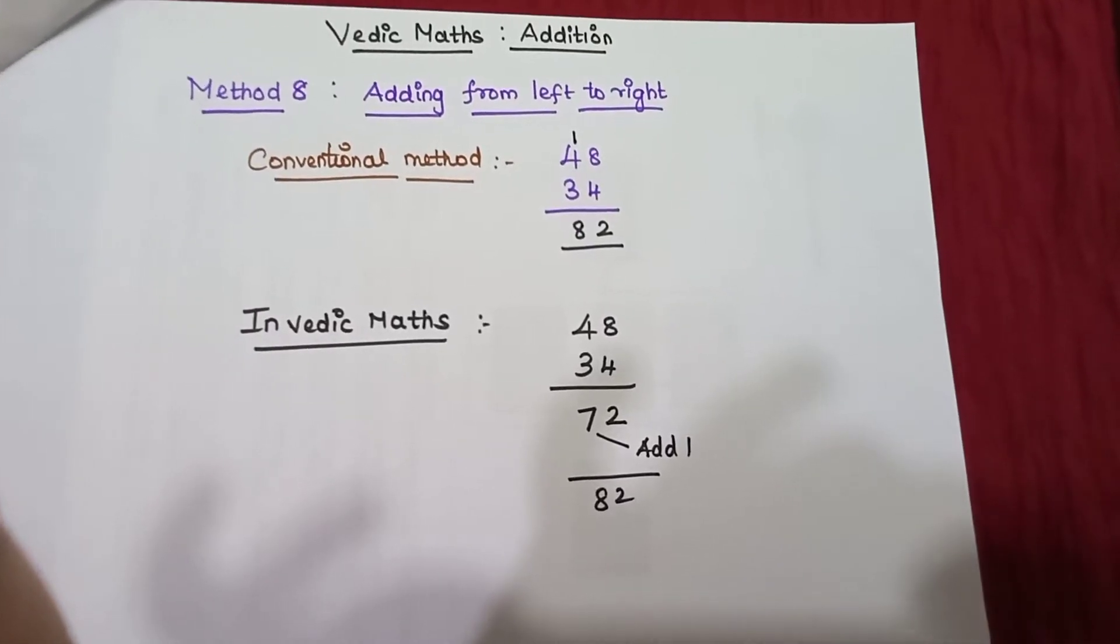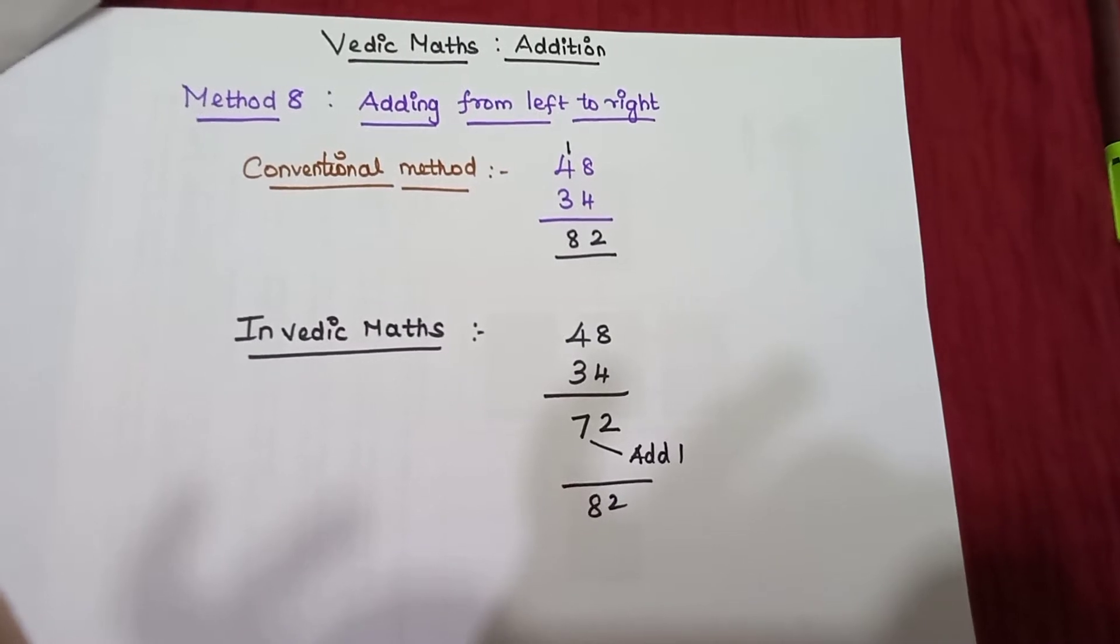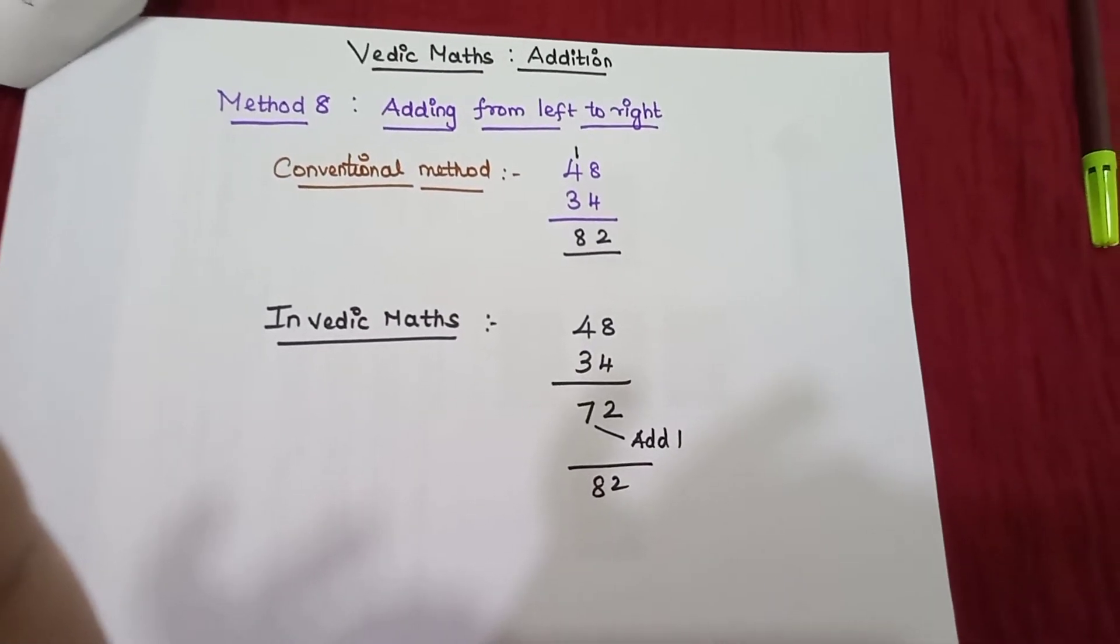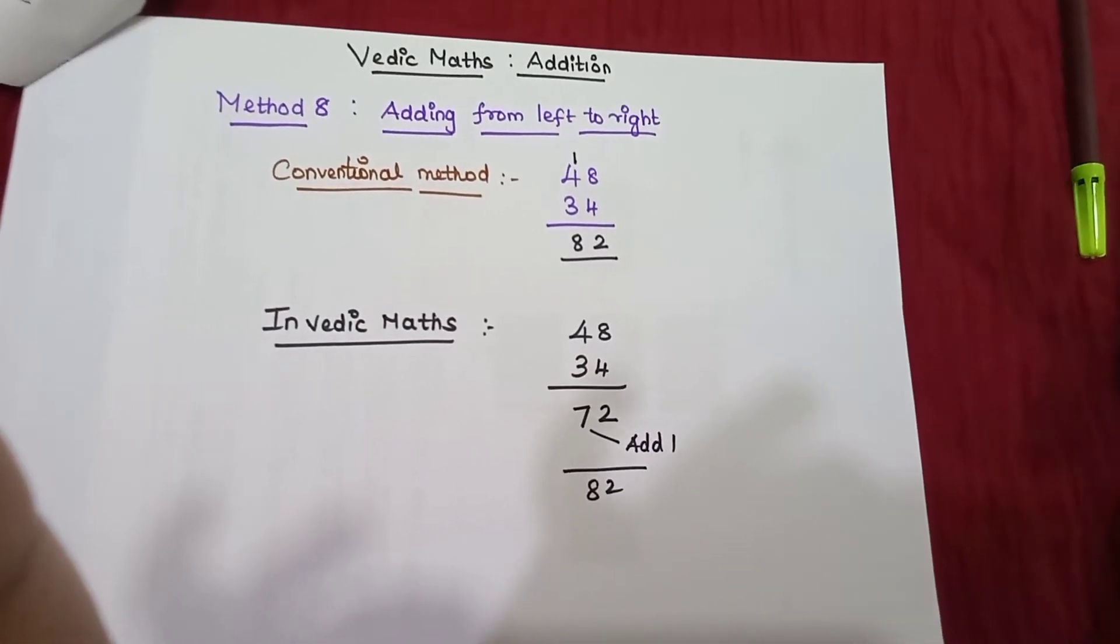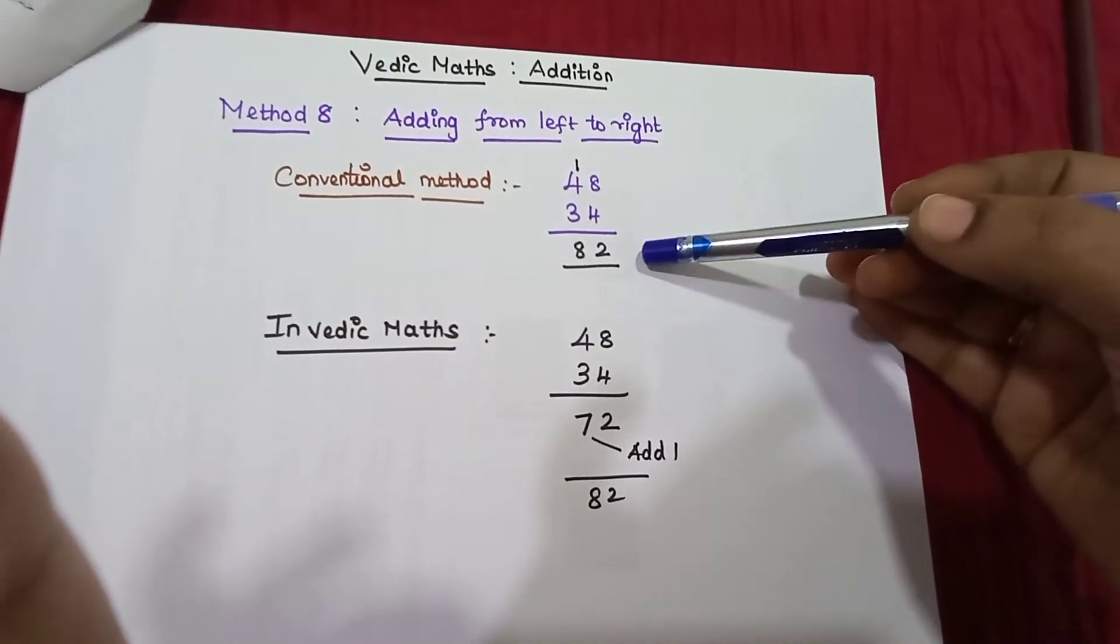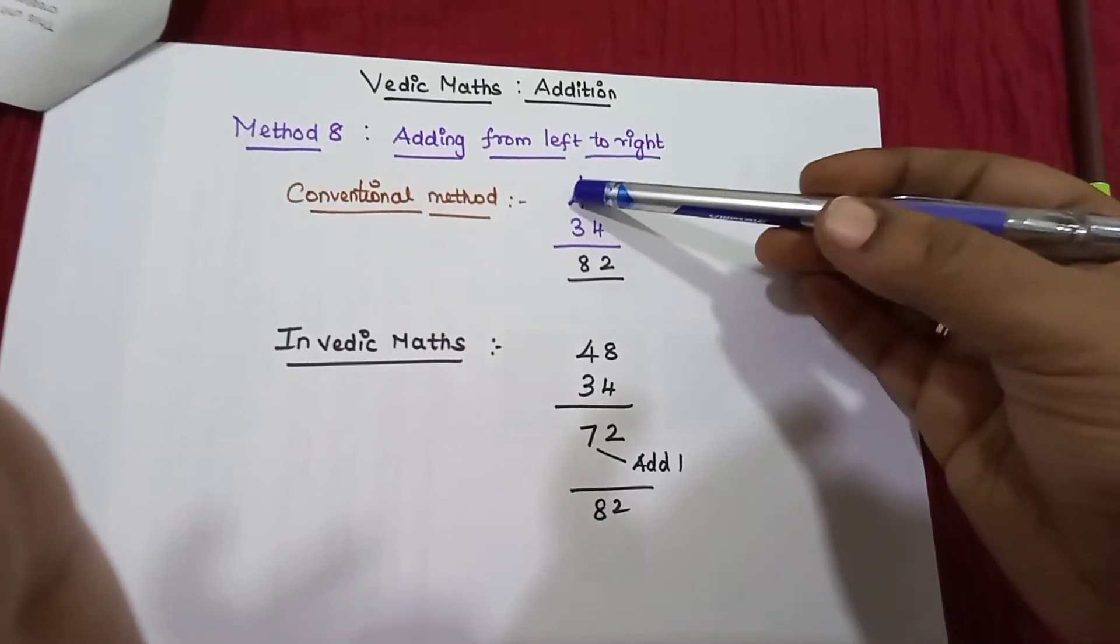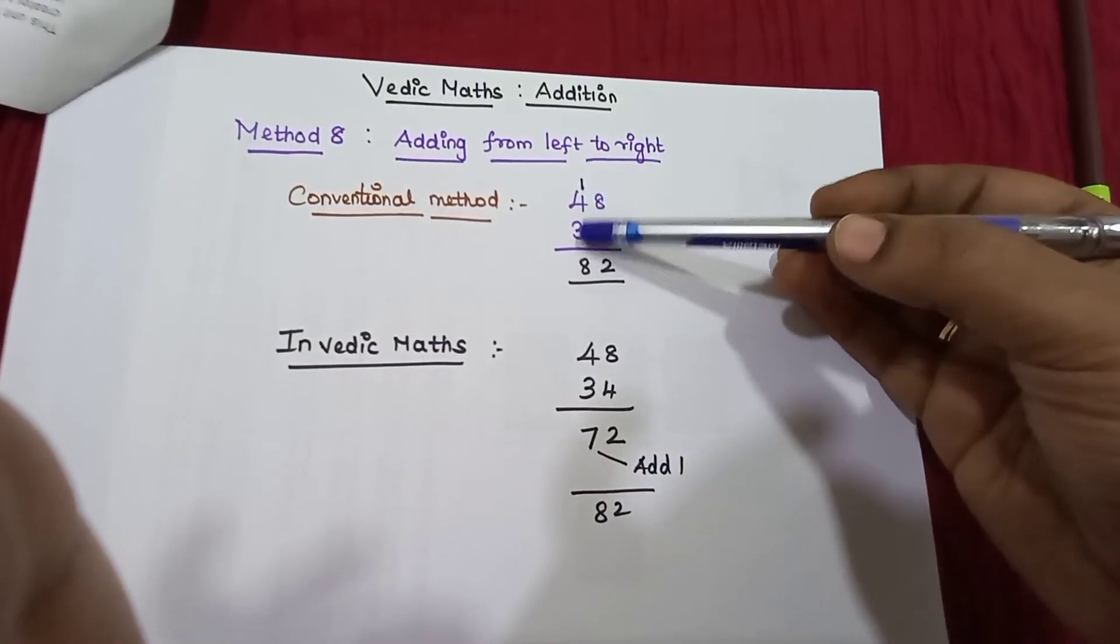Welcome you all to addition Vedic Maths Method 8: adding from left to right. Now the usual conventional method - we usually use this method and add 8 plus 4, 12, carry 1, 4 plus